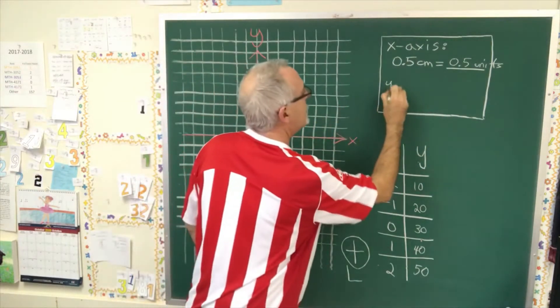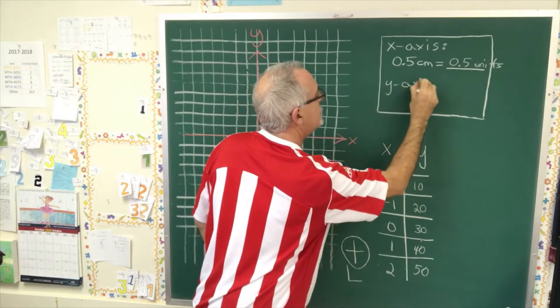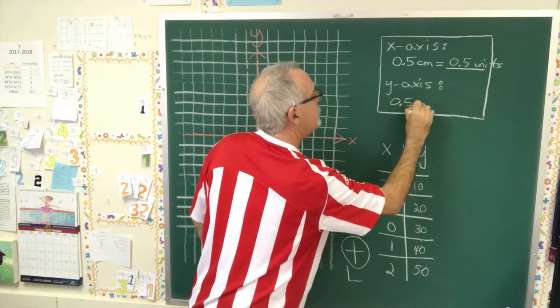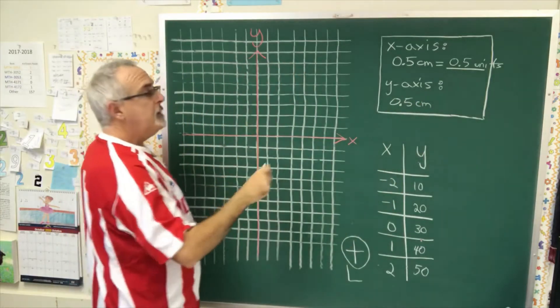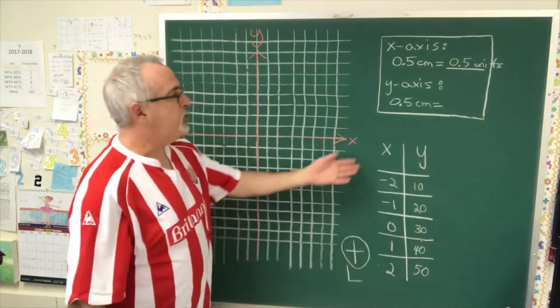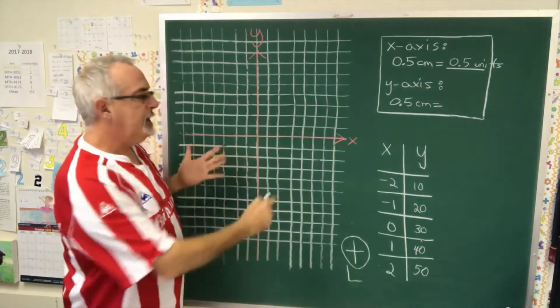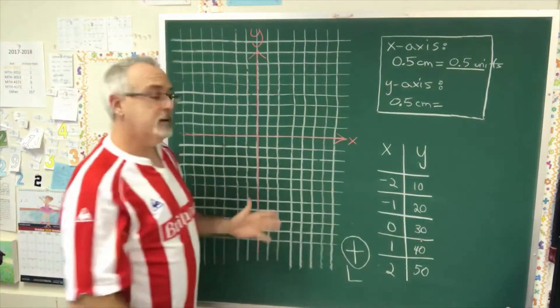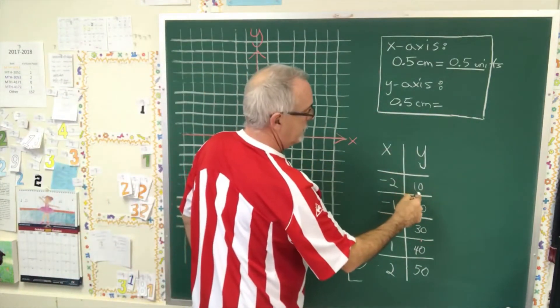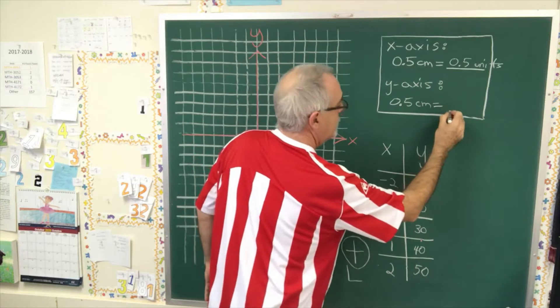Now, for the y-axis, I have a quite different situation. We still have the squares being 0.5 centimeters in height. And that's equal to, if we try to make them 0.5 units, we can't fit these huge numbers on here. So what we're going to do is make 0.5 centimeters is equal to 10 units.